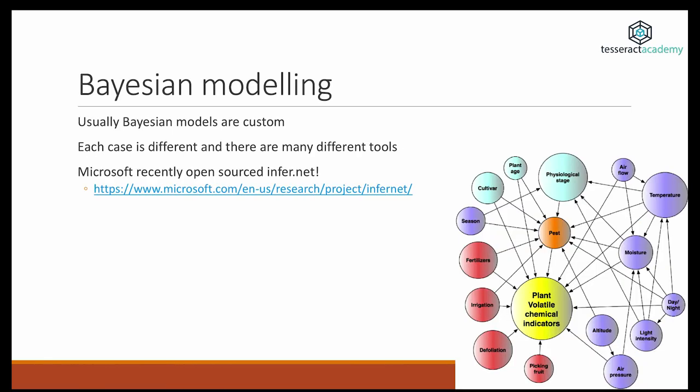One issue with Bayesian networks, this can be both an issue and an advantage depending on how you look at it, is that because of their expressiveness, usually each network is custom. Each problem requires a new kind of network that will be created from scratch. This means that you need to spend a considerable amount of time thinking and designing the network and then playing around with it and testing it.